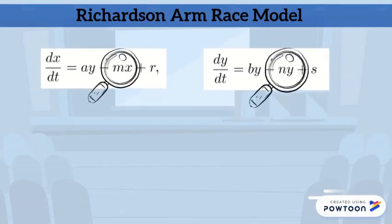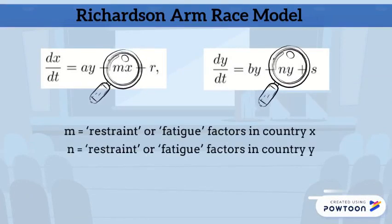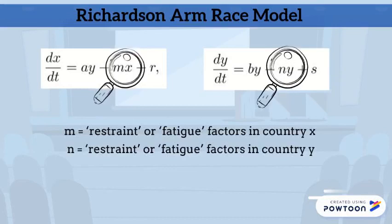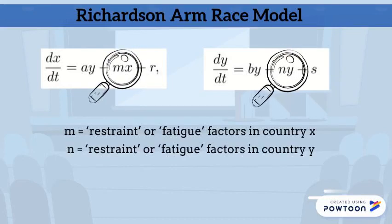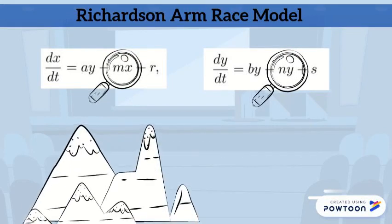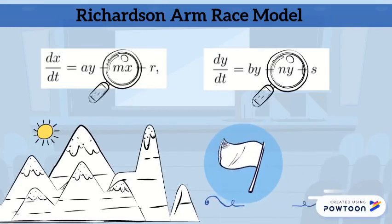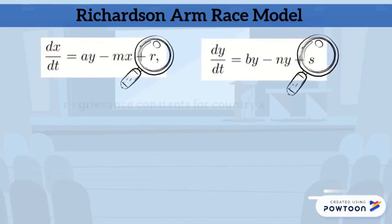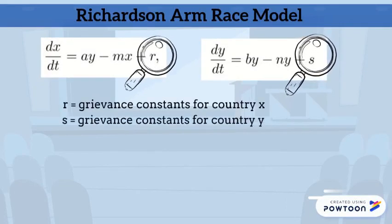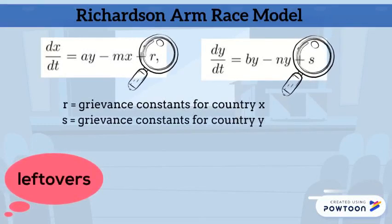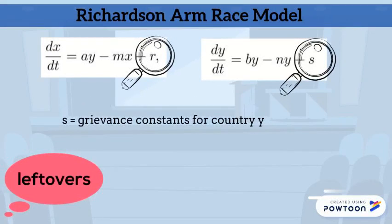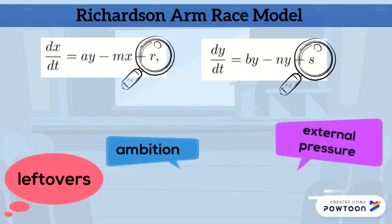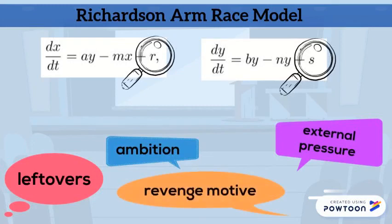The constants M and N are known as either the restraint or fatigue factors. They represent the desire of a nation to reduce arm stockpiles at a rate directly proportional to what they possess. Finally, R and S are the grievance constants. These constants can contain ambition, external pressure, a revenge motif, and other factors not directly related to arm stockpiles.